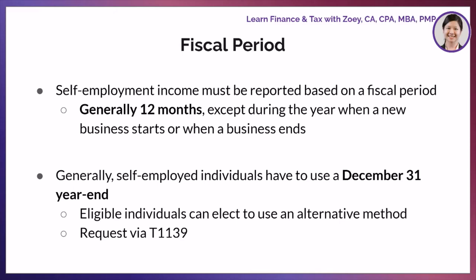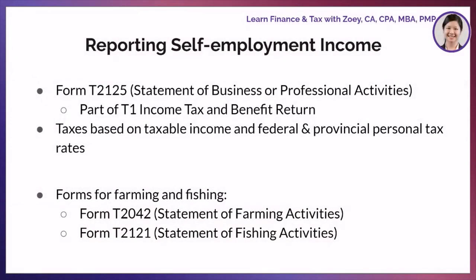The CRA reviews the request on a case-by-case basis. You can use Form T2125, Statement of Business or Professional Activities, to report your business and professional income and expenses. The information is then reported on your federal income tax and benefit return. Your tax payable will be based on your taxable income and federal and provincial personal tax rates. This is different from business income earned by a corporation, which is included in the T2 corporation income tax return.